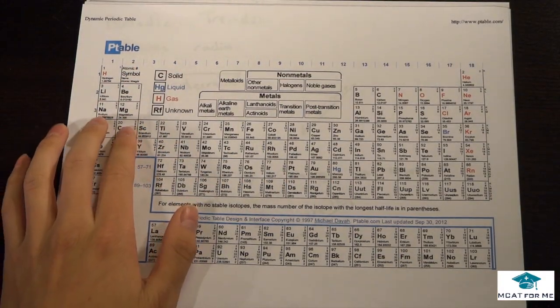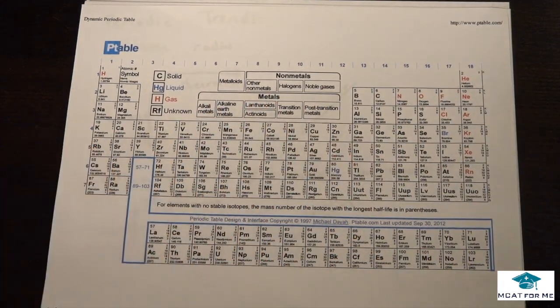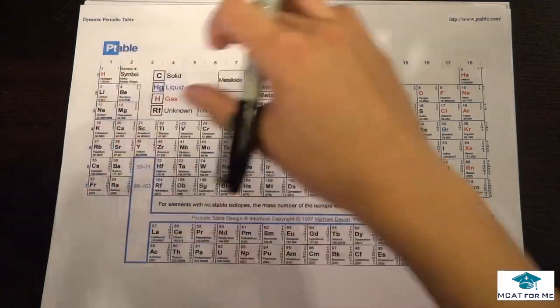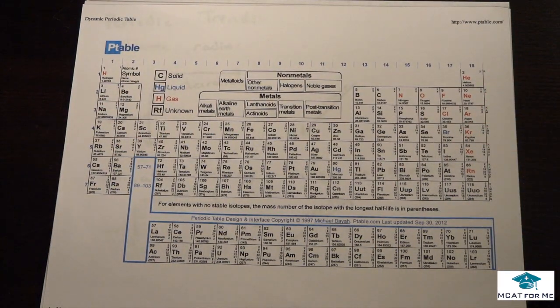And here we have the S block, the P block, the D block, and the F block. And we have metals on this side and non-metals on this side. And one thing to remember about that is this.